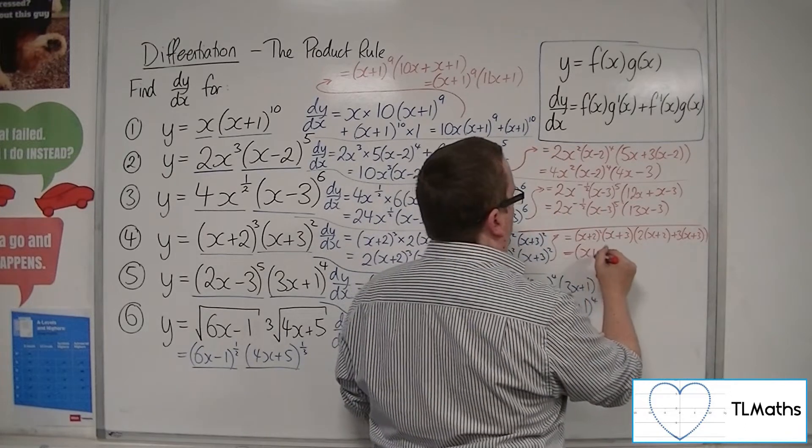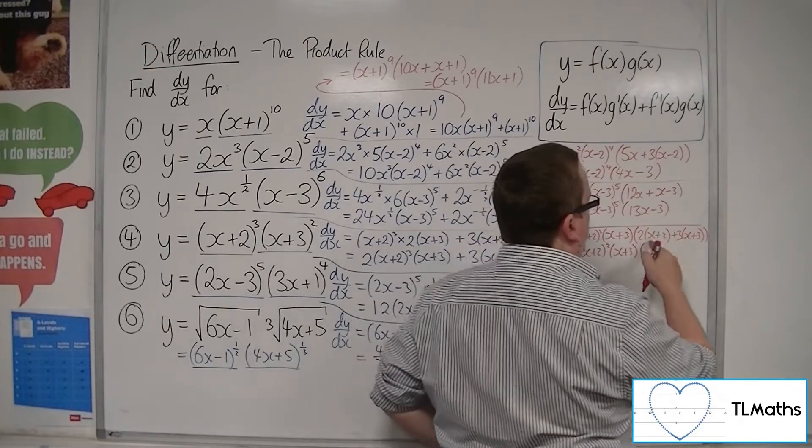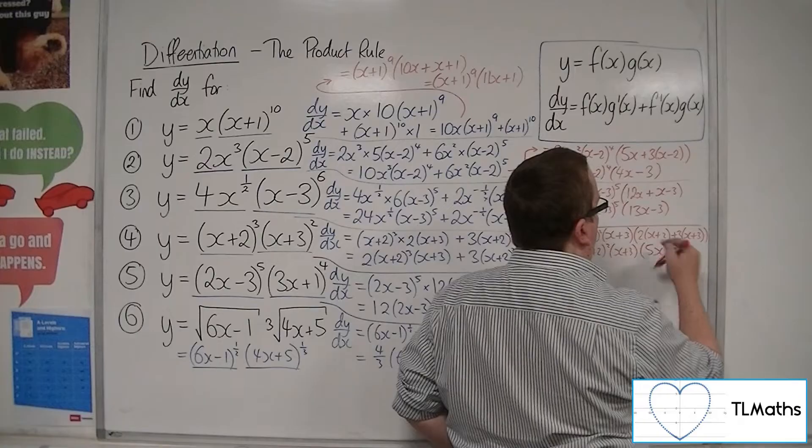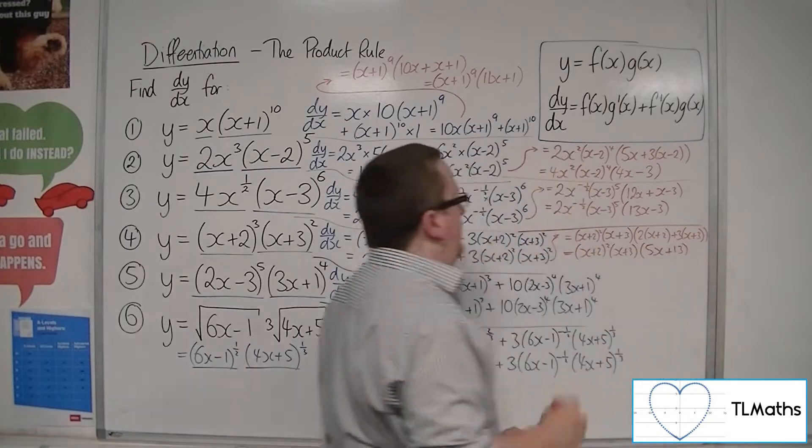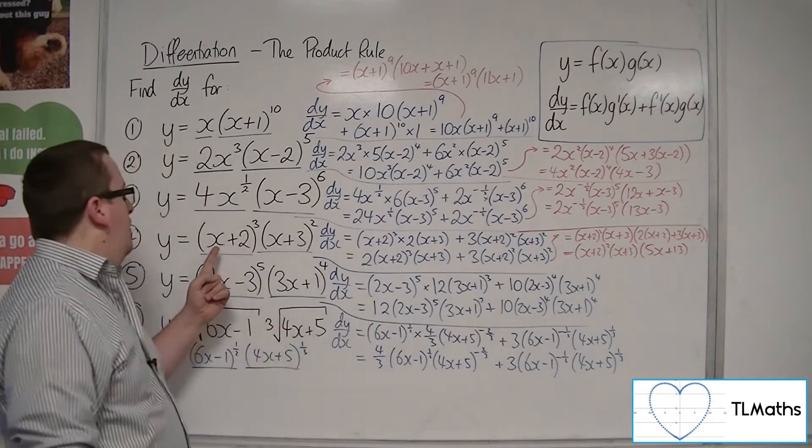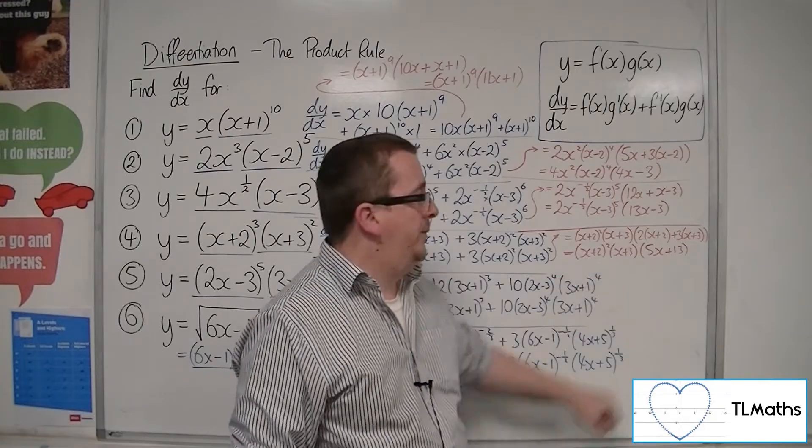And I've got 3 lots of an (x+3). So I've got (x+2)²(x+3), and then I've got 2x plus 3x, so 5x. Then I've got 4 plus 9, which is 13. So the stationary points for this curve sit at -2, -3, and -13/5.